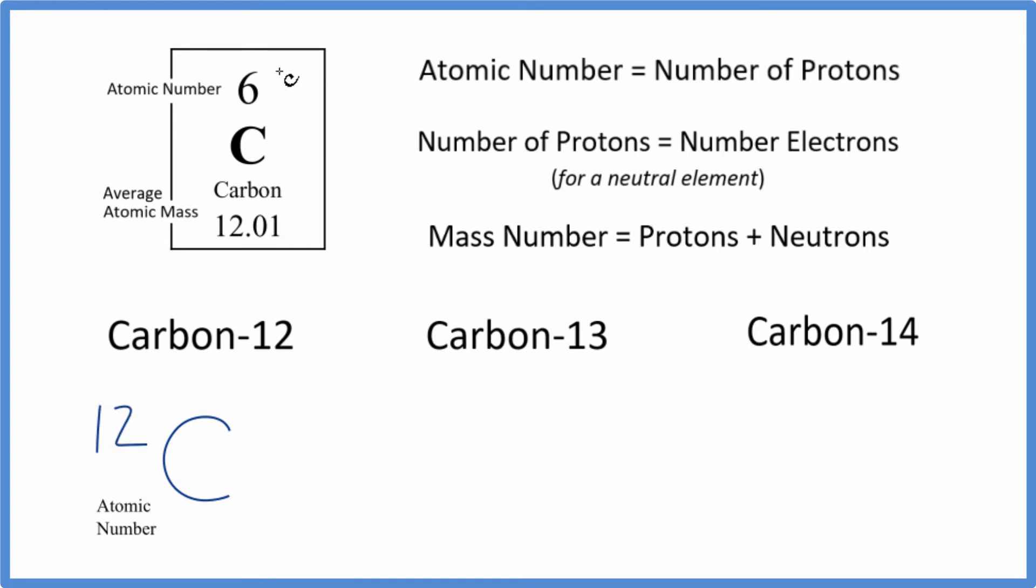And for the atomic number, that's on the periodic table. That's the 6 here, the number of protons. So let's change this to 6. And this is the nuclear notation for carbon 12, this isotope of carbon with the mass number of 12.